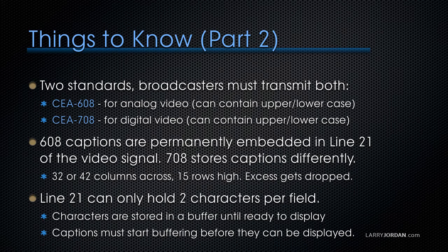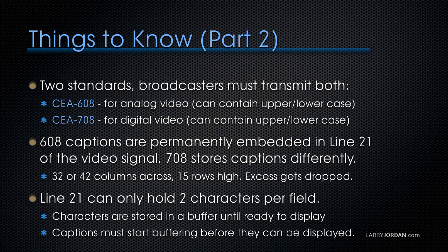Because there are two standards, and broadcasters are required to transmit both: CEA-608 and CEA-708. CEA-608 is used for analog video and can contain both upper and lower case text. CEA-708 is used for digital video and also can contain upper and lower case text, though live captions tend to be done in uppercase. CEA-608 captions are permanently embedded in line 21 of the video signal, while CEA-708 format is stored differently. With both formats, you have only 32 or 42 columns of letters — 32 for a 4x3 aspect ratio, 42 for a 16x9 aspect ratio — and both formats are only 15 rows high. In CEA-608, fonts are monospaced and characters in excess of 32 or 42 just get dropped.